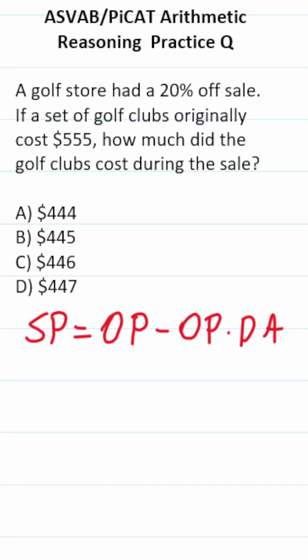For this ASVAB PICAT arithmetic reasoning practice test question, we're trying to calculate the sale price of an item. To do that, we're going to take the original price, and from that, we're going to subtract the original price times the discount amount.